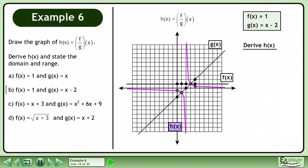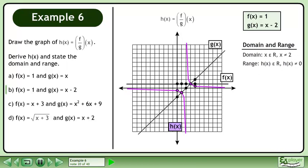Next, we'll derive the function h. Replace f with 1 and replace g with x minus 2. This gives us the combined function h equals 1 over x minus 2. The domain of h is x belongs to the set of real numbers with the restriction that x cannot equal 2. The range is h belongs to the set of real numbers with the restriction that h cannot equal 0.